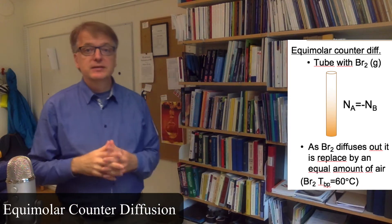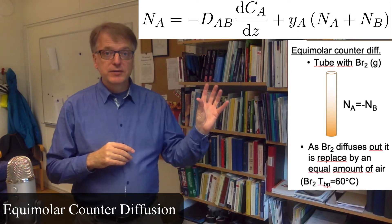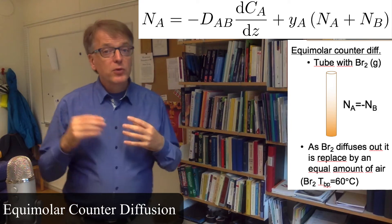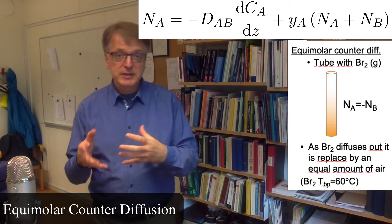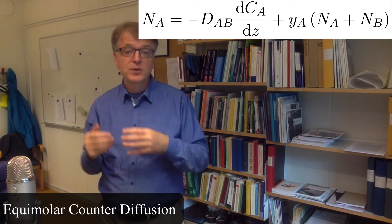You have this general equation here with the diffusivity times the concentration gradient, and then you have the convective part. For equimolar counter diffusion, what happens is that the same number of moles that diffuses out must also diffuse in.